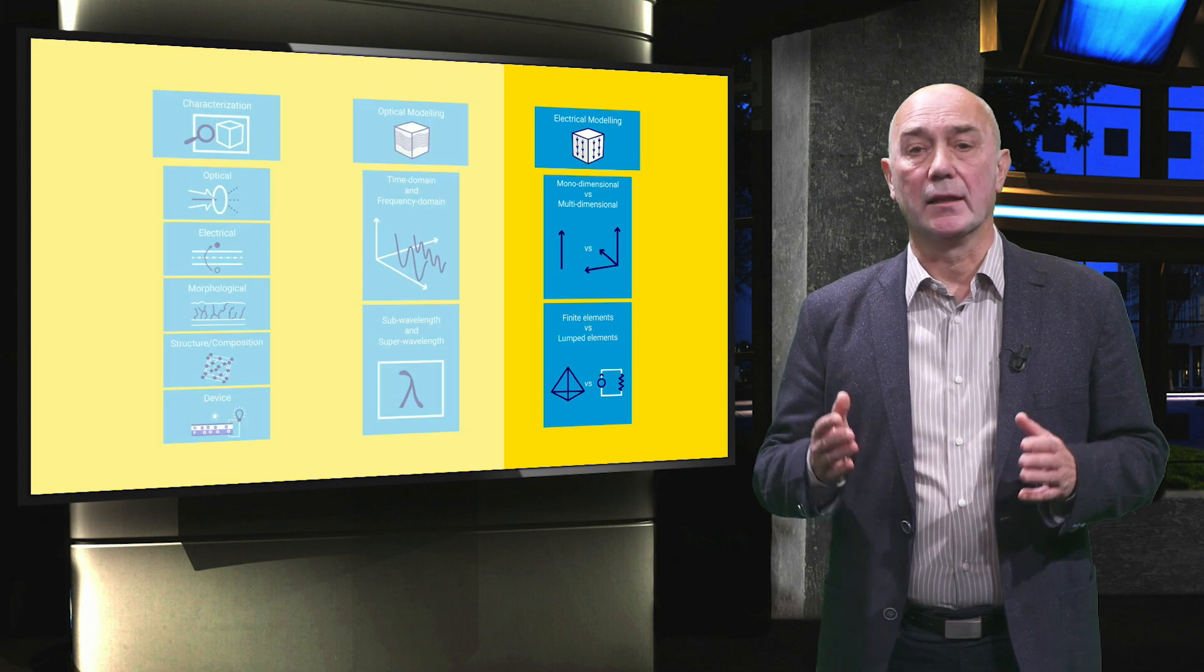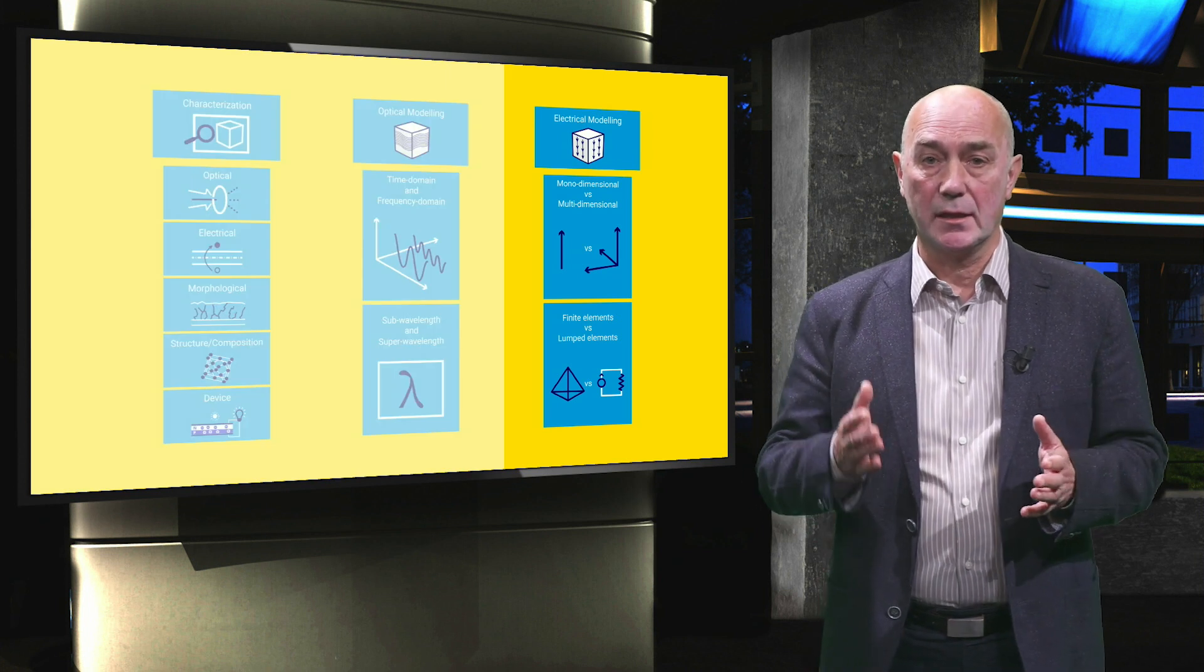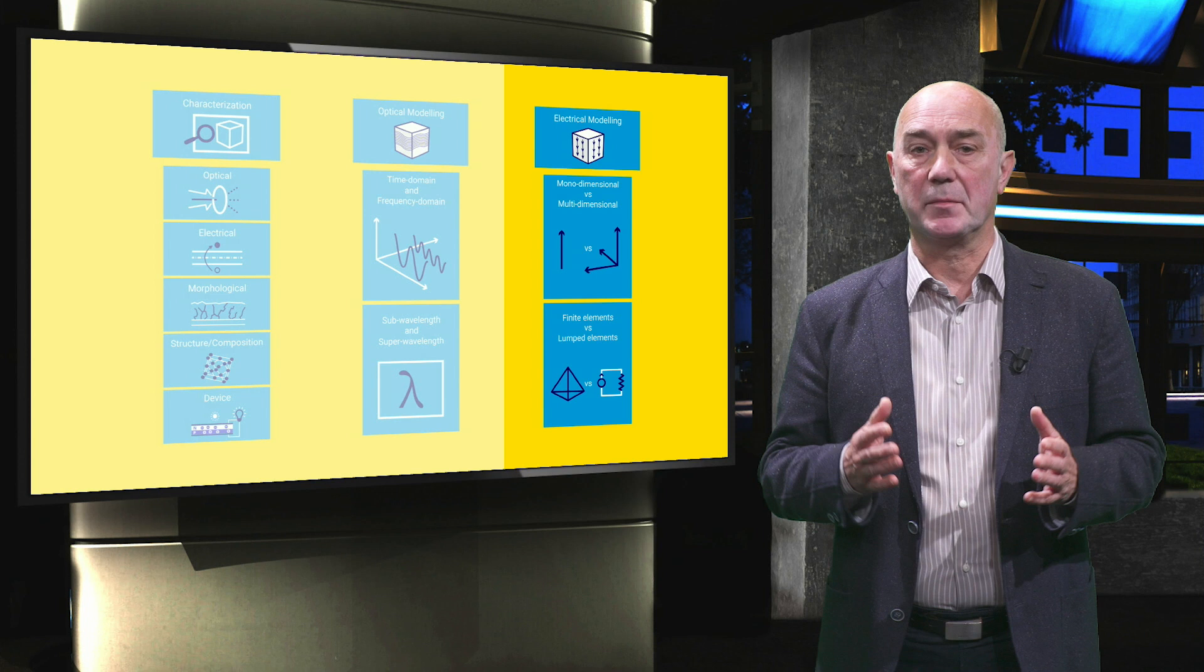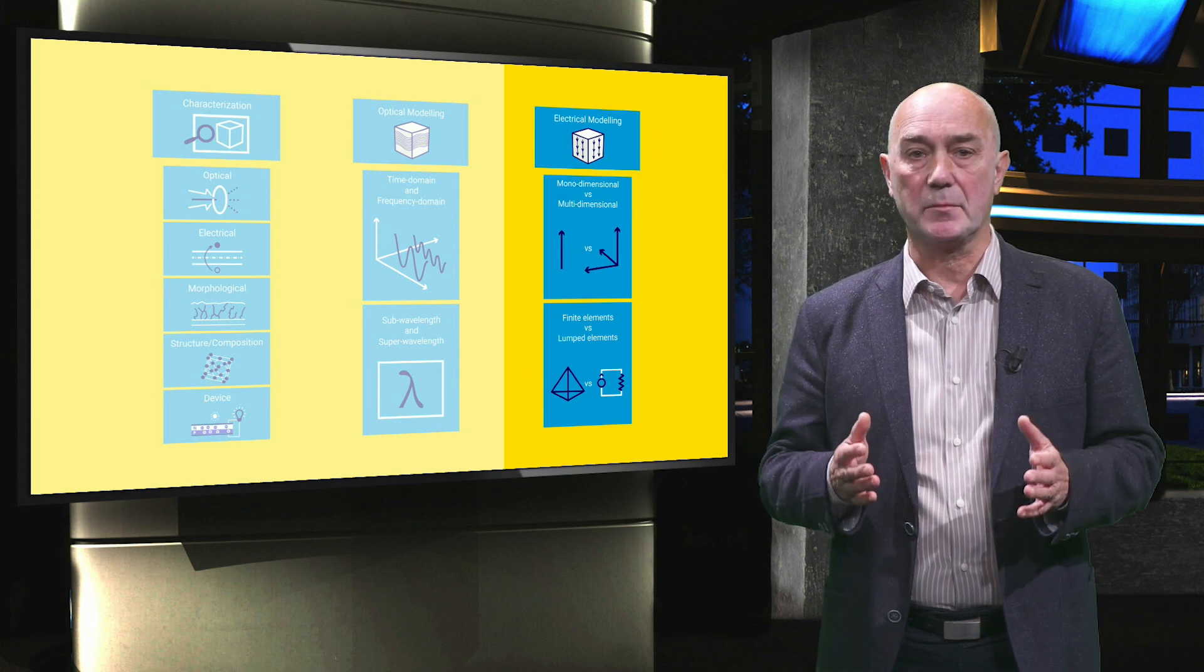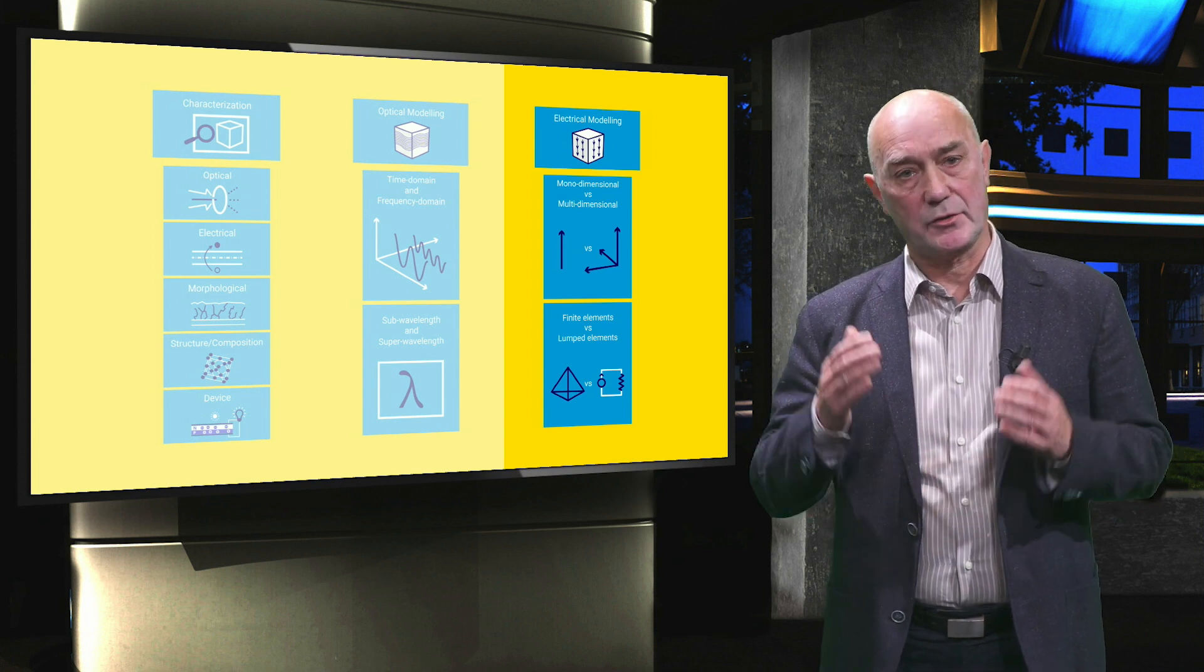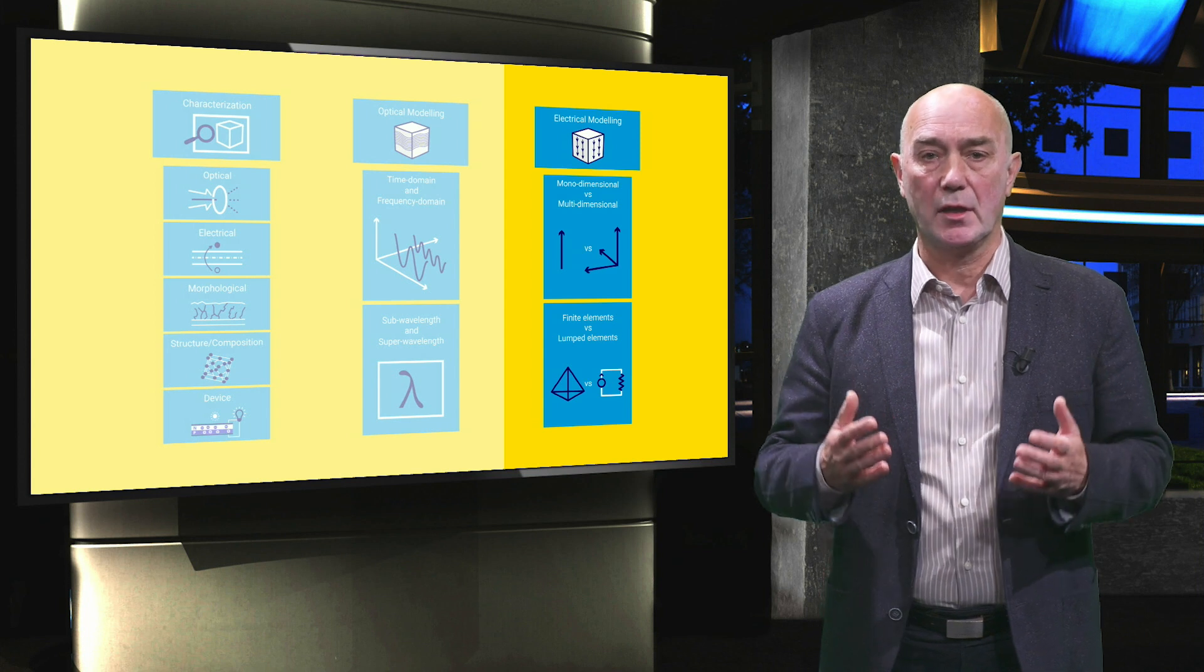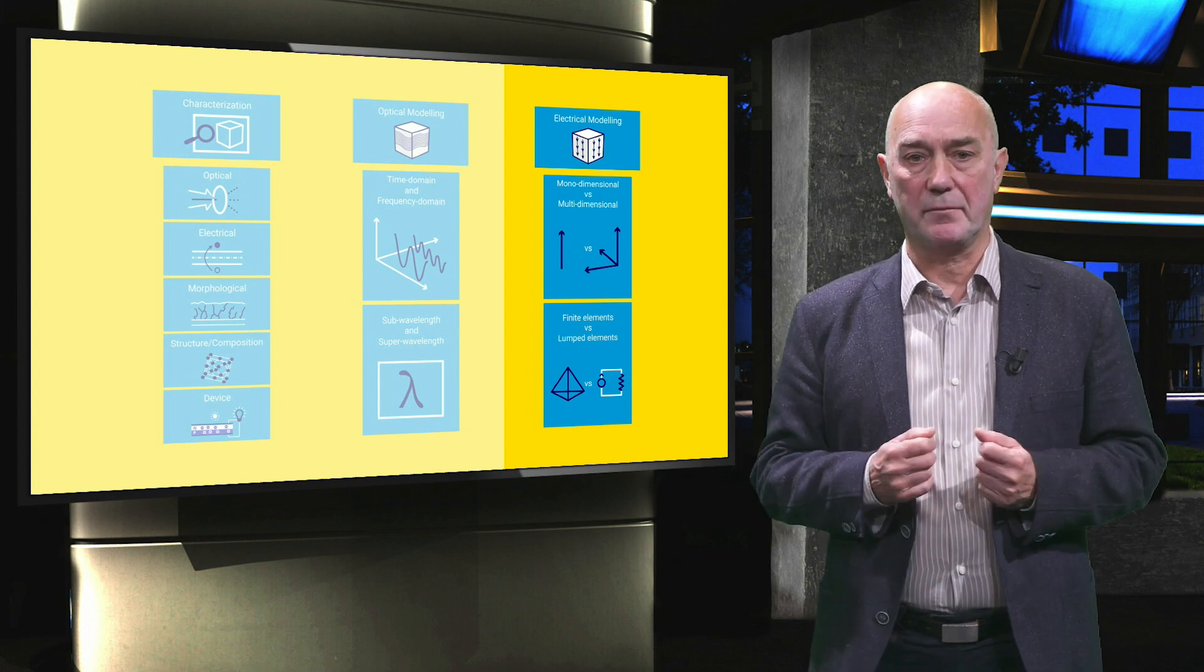In fact, the electrical modeling of solar cells results in the estimation of its performance, expressed in terms of external parameters such as current, voltage, power, and conversion efficiency.